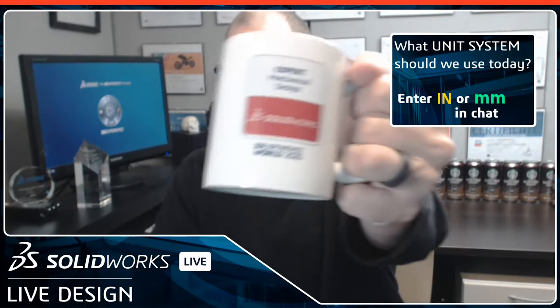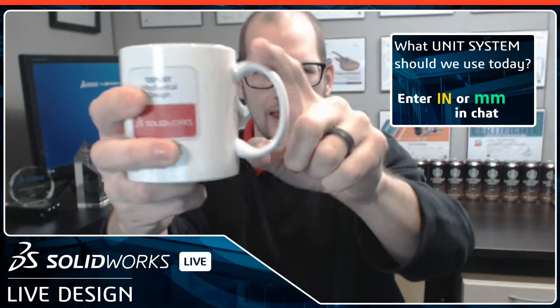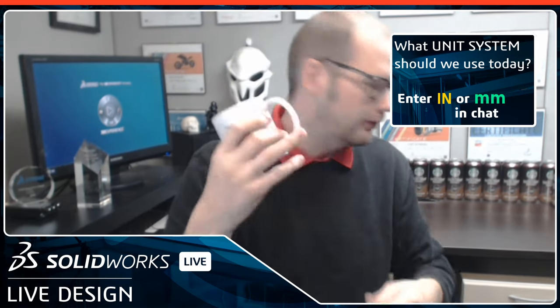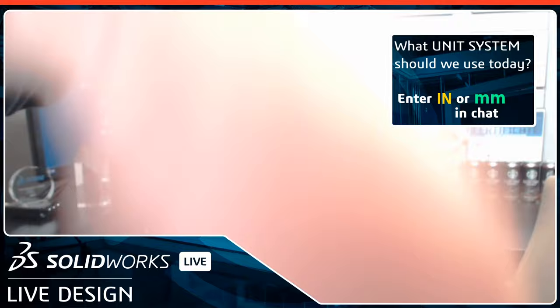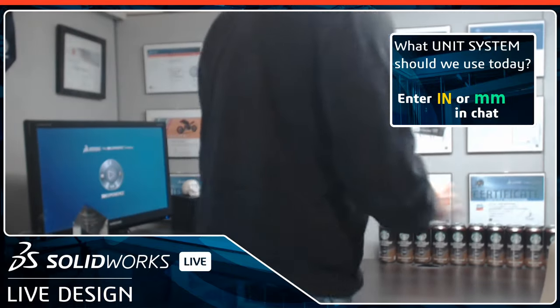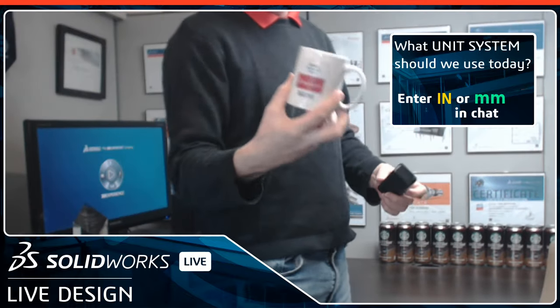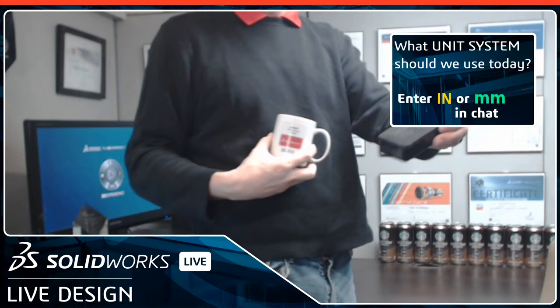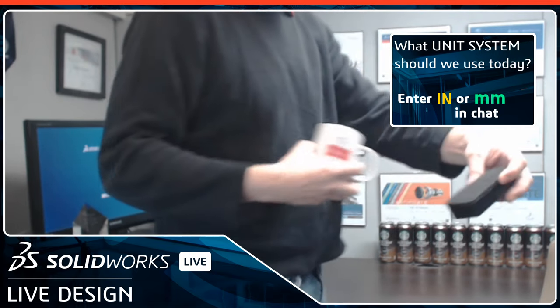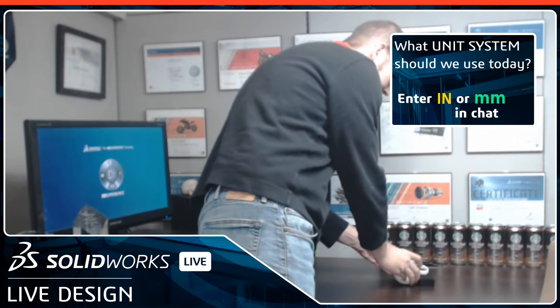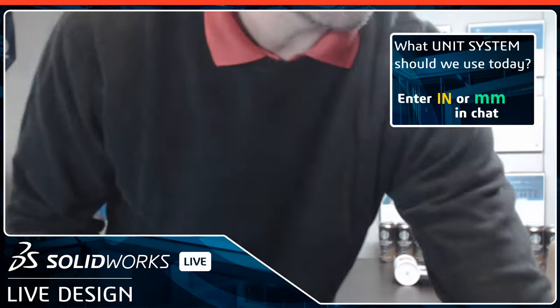One last thing before we get started: we're going to be modeling this coffee mug, and it has a handle with some swoopy geometry. I like to utilize photos in the SolidWorks workflow to help with that. I'm going to take a quick photo of the mug. A couple of tricks when taking a photo: you want the background blacked out, and you want to be perpendicular to the subject. I'll put the mug on my desk and grab my phone to take the picture.